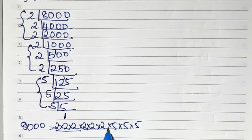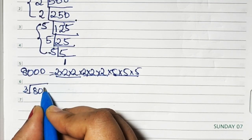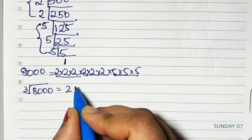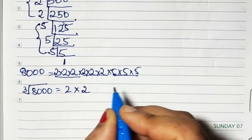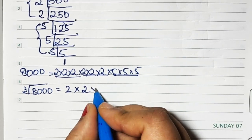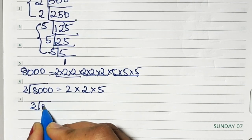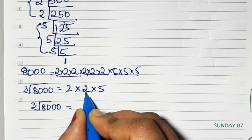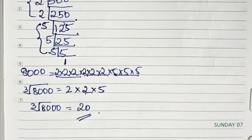So you have 3 groups. Now when you write the cube root of 8000, you take 1 number from each group: from this group I took 2, from this group another 2, from this group 5. So basically cube root of 8000 is 2 × 2 × 5 = 20. So 20 is the answer.